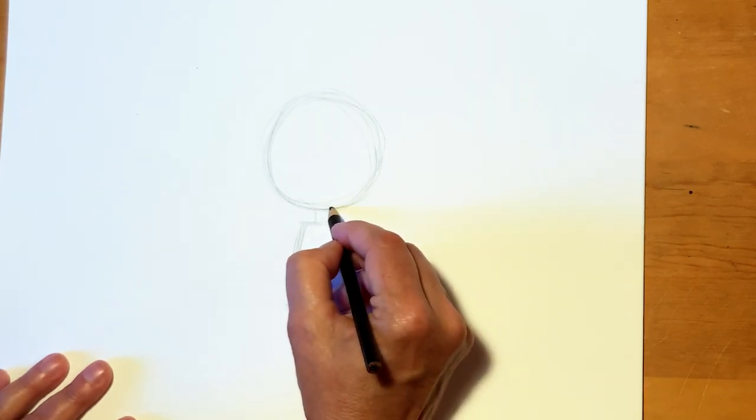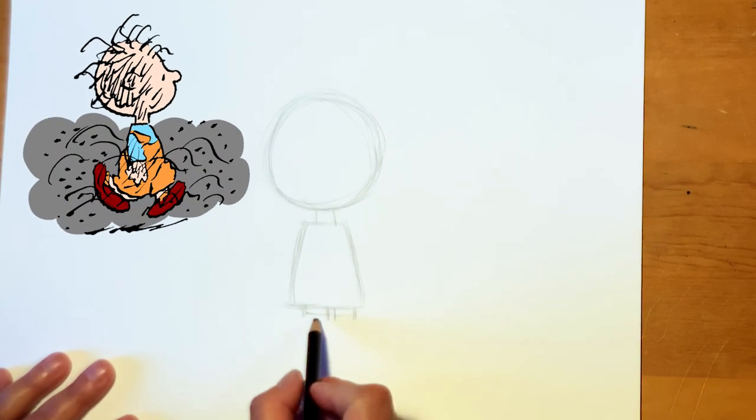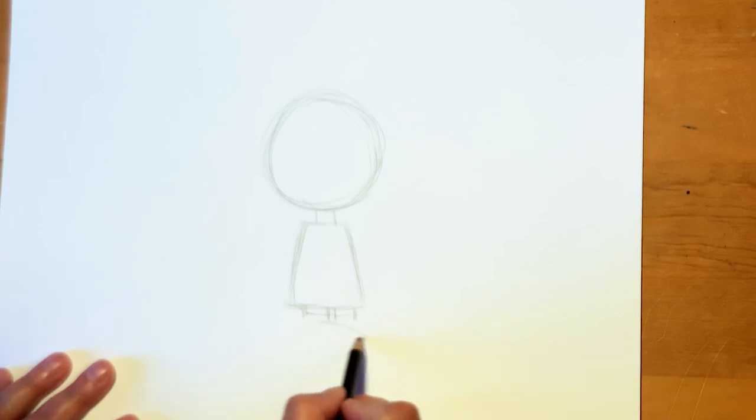Here's his head. There's his neck. We're going to do light lines where his legs are going to go. His short legs. Here's his feet.